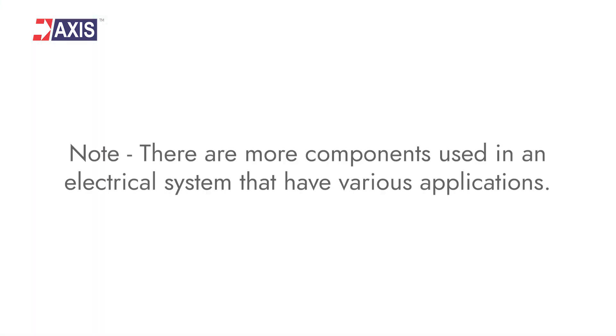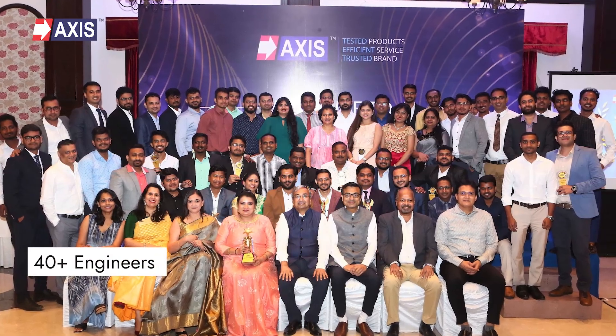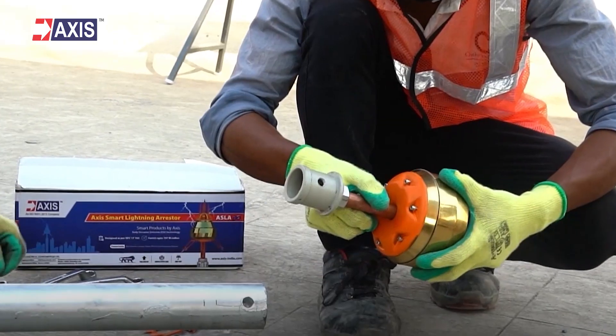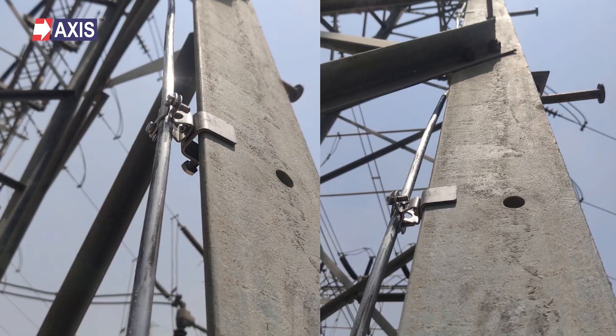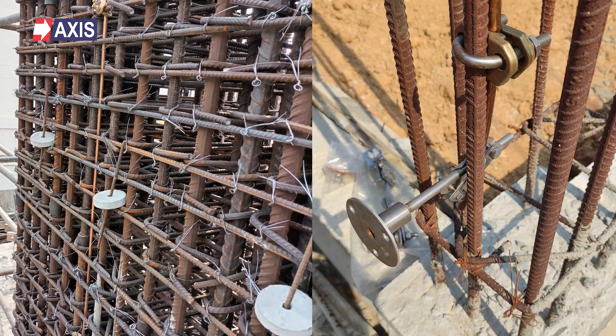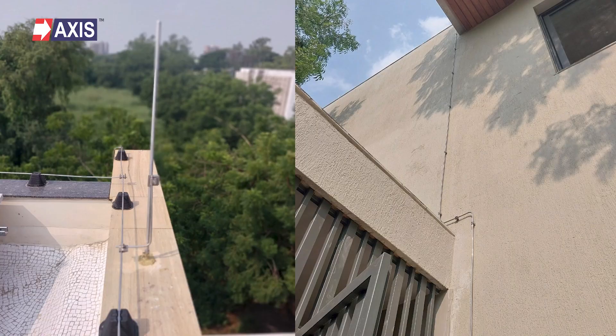So these were some of the important components we see in a single line diagram. Please note, there are many more components used in an electrical system that have various applications. At Axis, we have a team of 40-plus engineers who are here to help you in designing, installing and testing your earthing and lightning protection systems for your substations. Our products have been used in 80-plus countries, in substations, data centers, factories and even in everyday residential and commercial buildings.